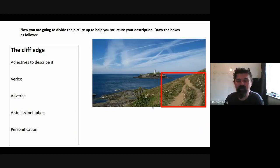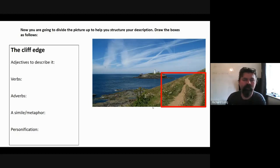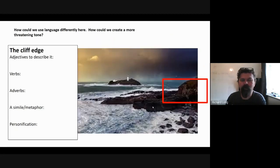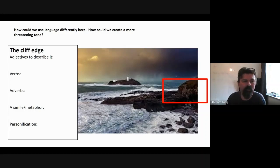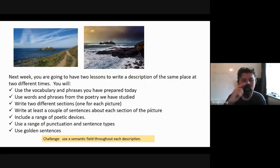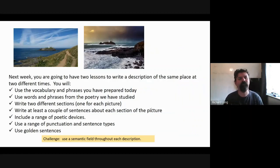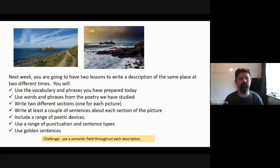So what we're going to do next week: you are going to have two lessons to write a description of the same place at two different times. You're going to use the phrases and vocab we've used today. You can use words and phrases from the poetry. You're going to write two different sections, one for each picture — you're not going to be writing loads and loads, not five paragraphs for one and five for another. Try to use that range of poetic devices: similes, metaphors, personification, alliteration, plosives if you're describing something violent. Make sure you use a range.